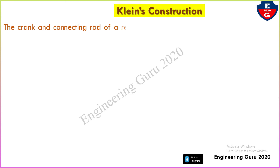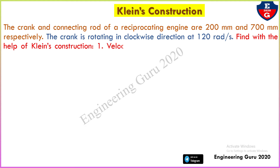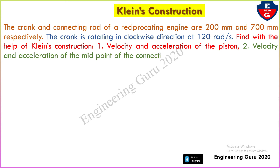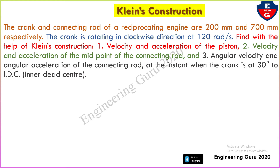Now understand Klein's construction using one example. The crank and connecting rod of a reciprocating engine are 200 mm and 700 mm respectively. The crank is rotating in the clockwise direction at 120 radian per second. Find using Klein's construction: first, velocity and acceleration of the piston; second, velocity and acceleration of the midpoint of the connecting rod; and third, angular velocity and angular acceleration of the connecting rod at the instant when the crank is at 30 degrees to the IDC.